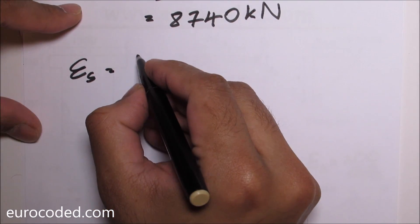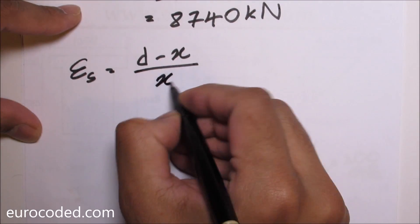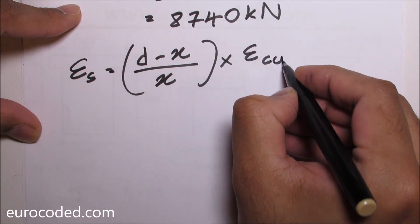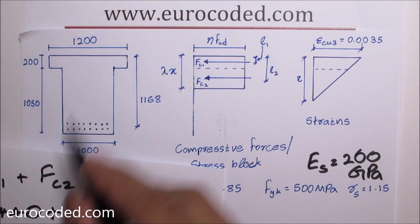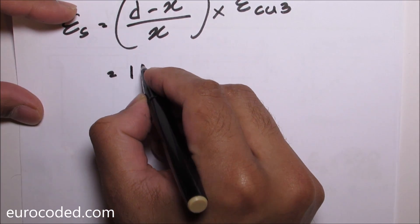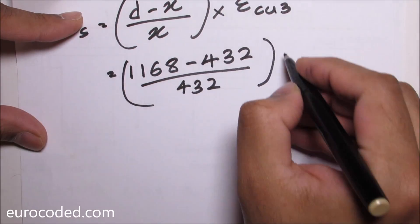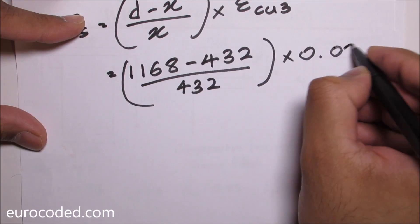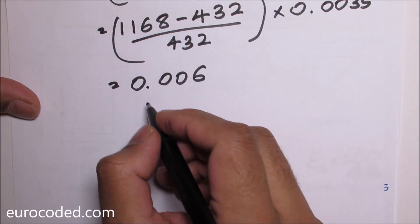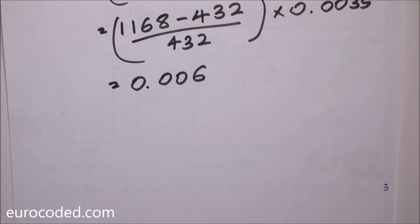And we can calculate the reinforcement strain. Epsilon S is effective depth minus the depth to the neutral axis over depth to the neutral axis times epsilon cu3. That was derived from these diagrams. And the reinforcement strain 0.006 proves that this reinforcement steel is yielding, because it's bigger than the yield strain of reinforcement.